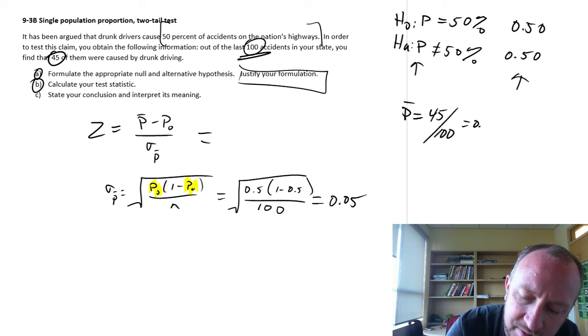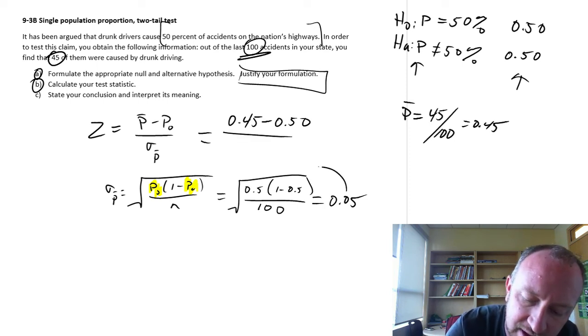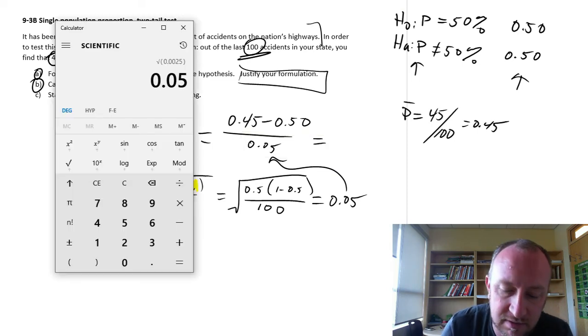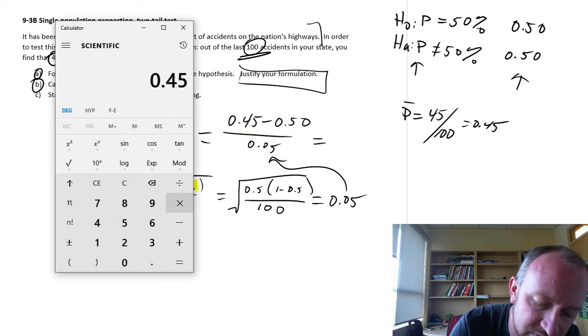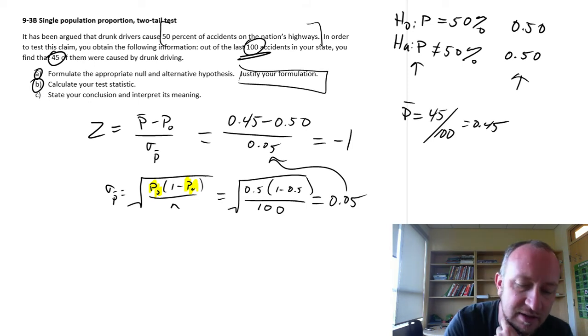And here that sample proportion is 45 out of 100. So that's 0.45 minus our hypothesized value divided by that standard error. And this looks like it's going to be just equal to negative 1. 0.45 minus 0.5 divided by 0.05. And there we have negative 1. So there we have our test statistic.